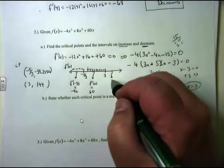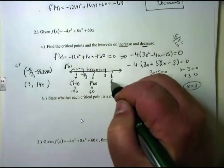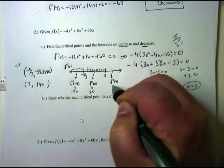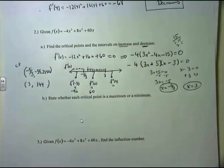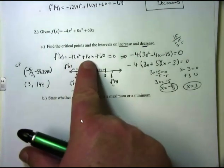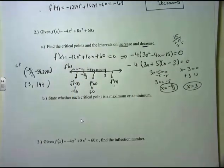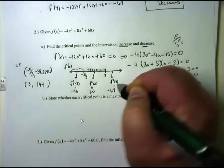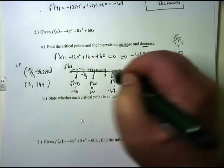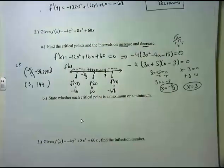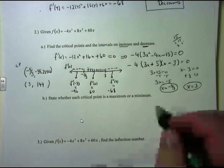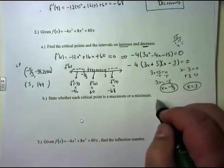If I pick a number bigger than 3, I choose 4. Plugging 4 into my derivative: -12 times 4 squared plus 16 times 4 plus 60. When I plug in 4 into my derivative, I get -68. The sign is negative, so that interval is decreasing.